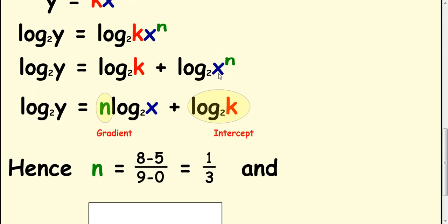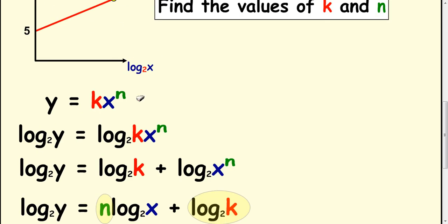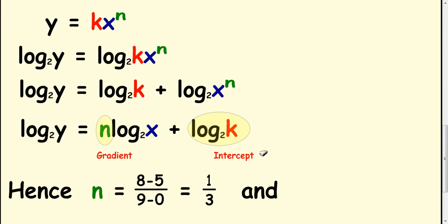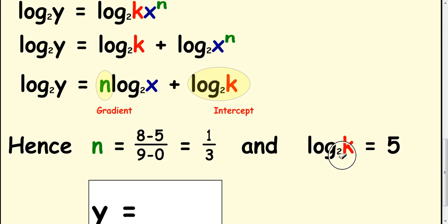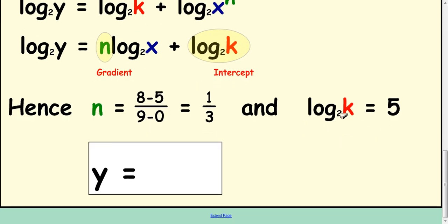And your intercept, if you look up here, is 5. So, this is going to equal 5. Now, to work out what k is, 2 is your base and 5 is your power. So, you basically just rearrange this to 2 to the power of 5. And that comes out as 32.